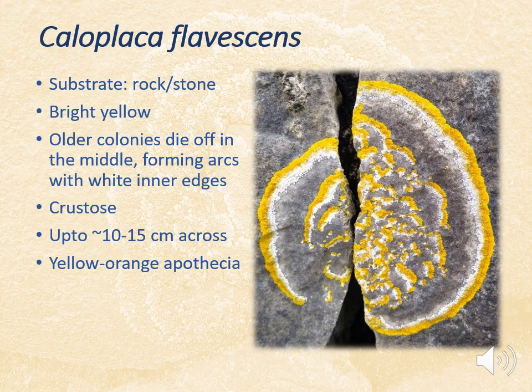The third Caloplaca species is Caloplaca flavicans, which looks very similar to Caloplaca marina, but the thallus tends to be a much brighter yellow — less orange — and it has a characteristic white line on the inside of the leading growing edges. It can also form really quite large colonies.